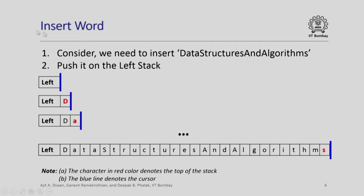Consider inserting the word 'data structures and algorithms' — push it to the left stack. So I type D, A, and so on, and every time I type a character it is pushed onto the left stack. When I push this entire string of characters, the right stack will contain nothing and the left stack will contain all these characters, with my cursor continuing to act as a divider.